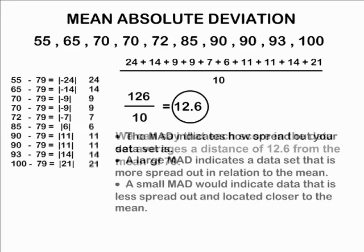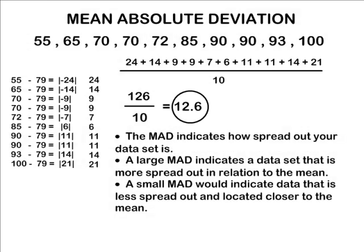The mean absolute deviation indicates how spread out your data set is. A large mean absolute deviation would indicate a data set that is more spread out in relation to the mean. A small mean absolute deviation would indicate a data set that is less spread out and located closer to the mean.